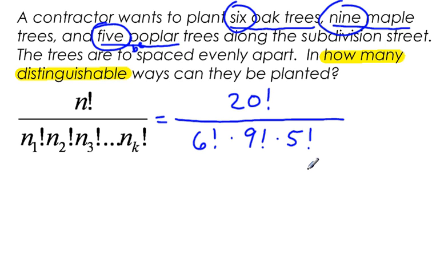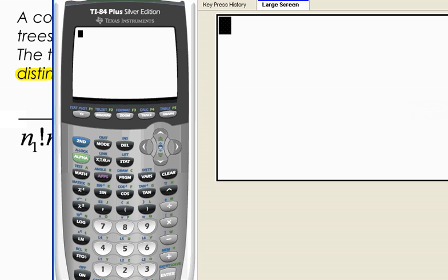Now, trying to find all of these is going to be fairly difficult. I do not want to write out 20 times 19 times 18 times 17, all the way down to times 1, and then do the same thing for 6 factorial, 9 factorial, and 5 factorial. So let's use technology. We have technology. It is a tool that for most of us is readily available, so let's use technology.